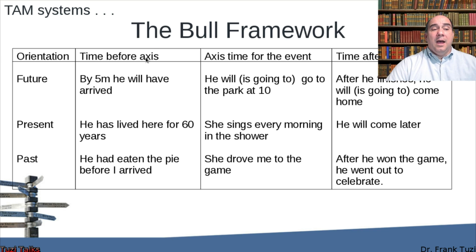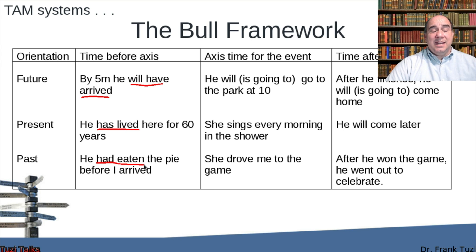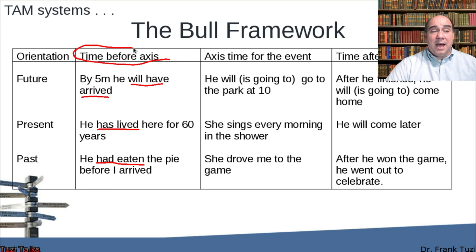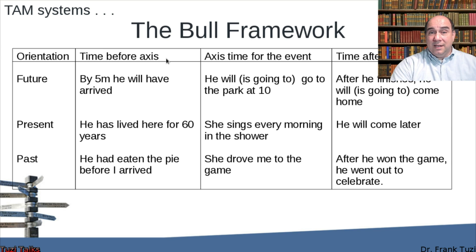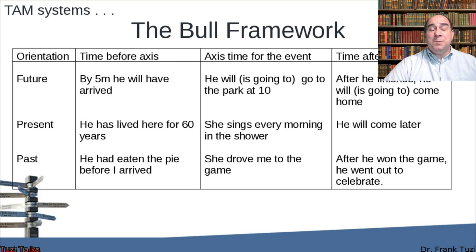A time before a time in the present would be "he has lived," and in the past "he had eaten" — this is the time-before-time axis. Bear in mind, this concept doesn't necessarily exist in every language with a specific grammatical or lexical setup within the tense aspect modality system. Some languages figure out another way to express it, but it's not built into their TAM system.